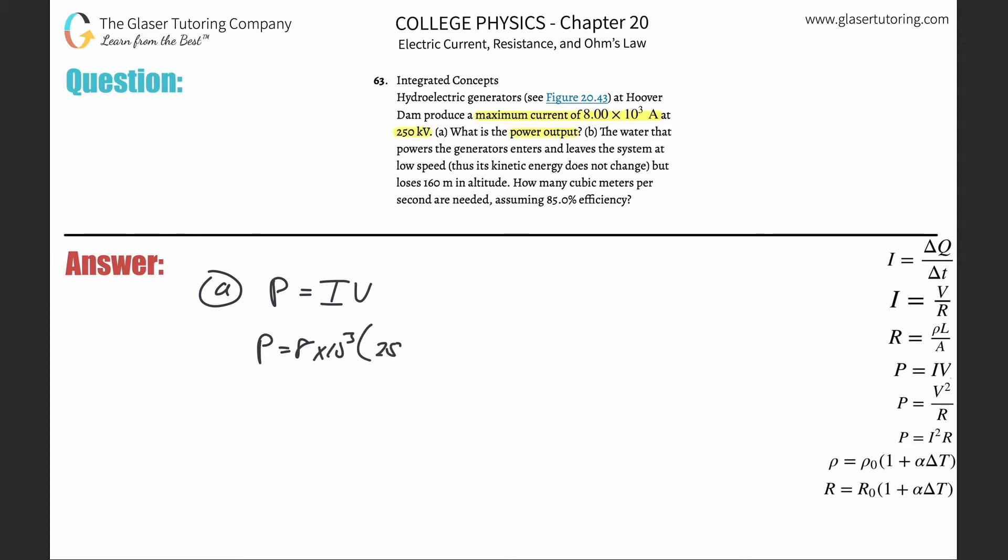We need that in volts, so just take that value and multiply it by 1000. Now we just plug it in: 8×10³ multiplied by 250×10³.